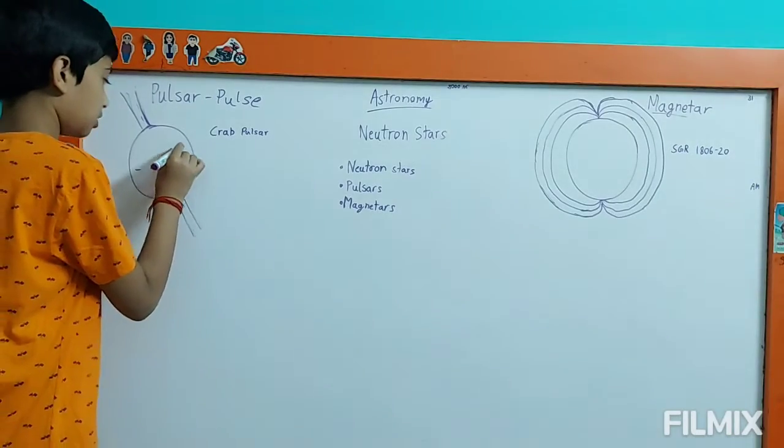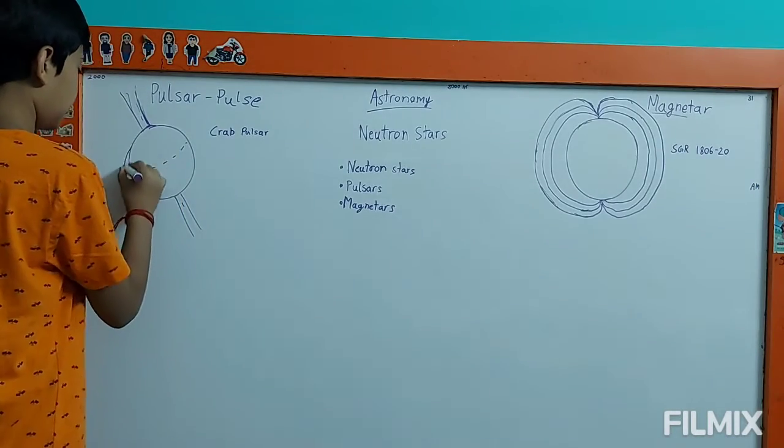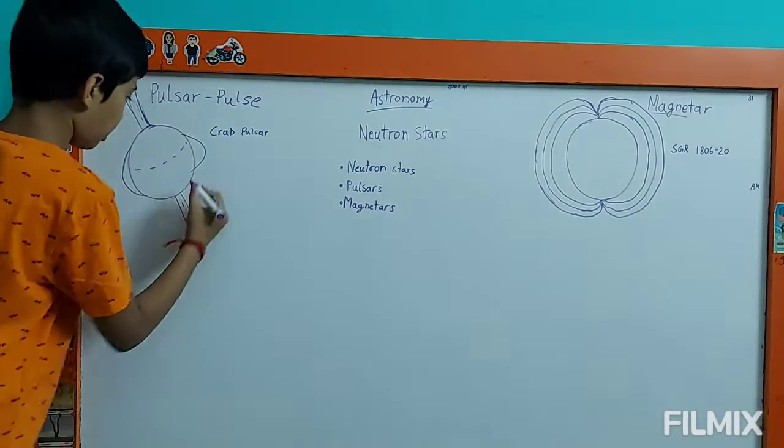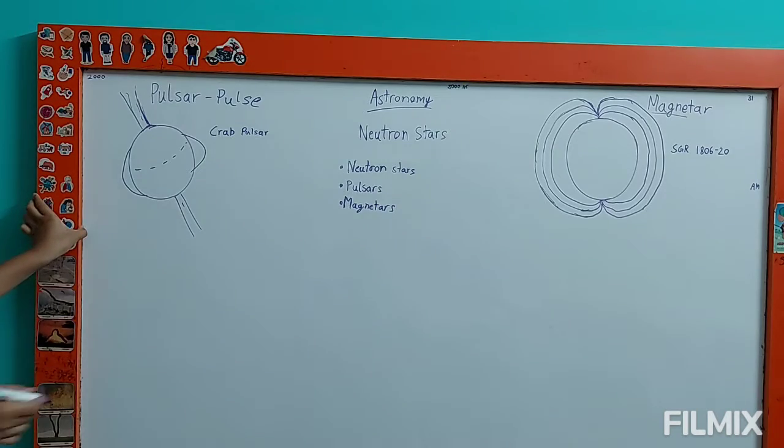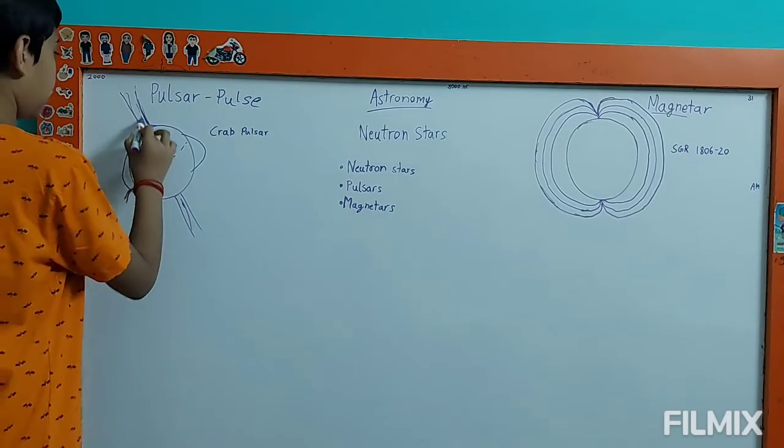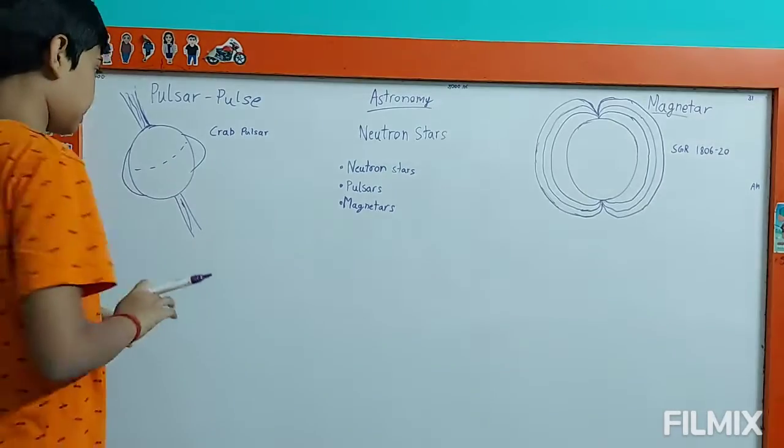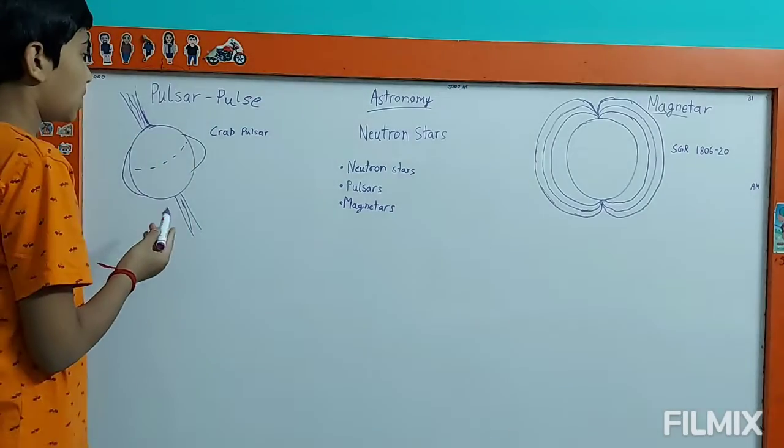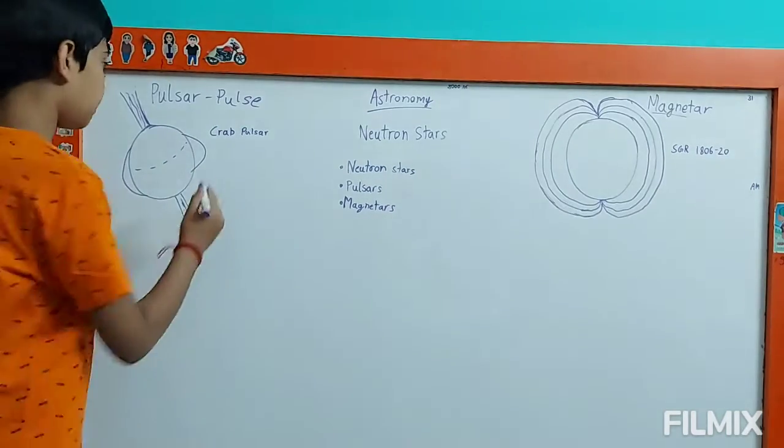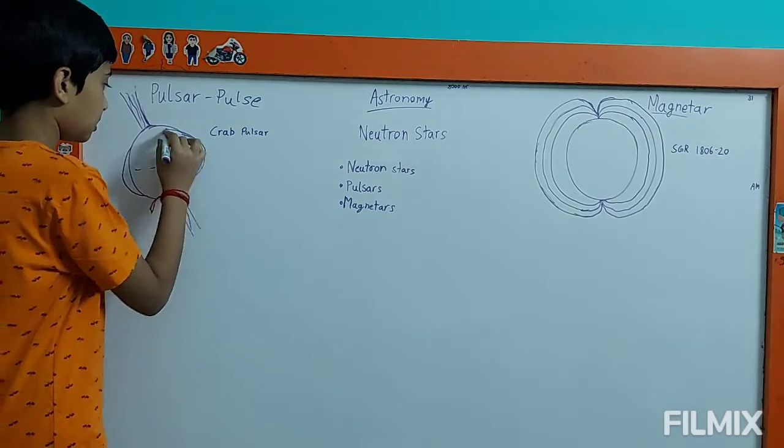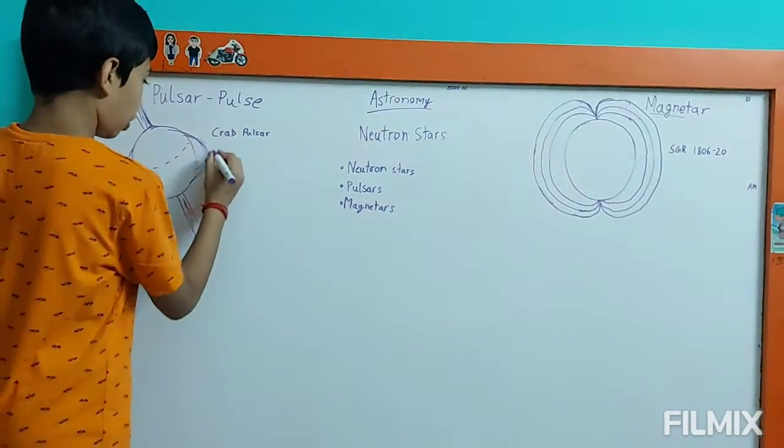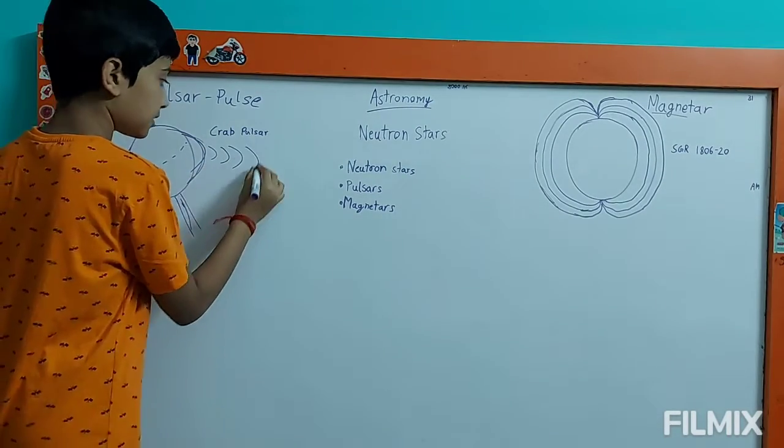The rapid rotation of the pulsar causes a bulge due to centrifugal force. And these jets are due to the immense spinning that matter is ejected from the jets. And due to the rapid rotation, it also emits a kind of pulse.